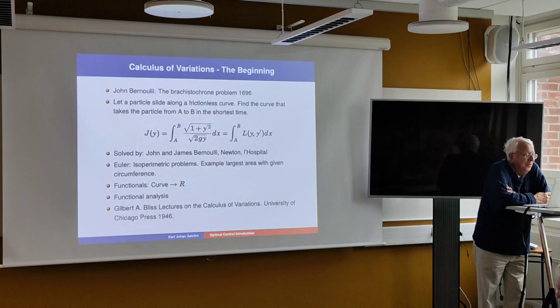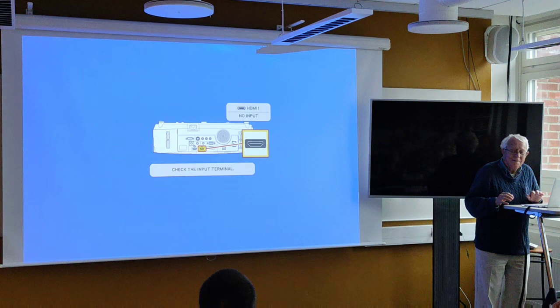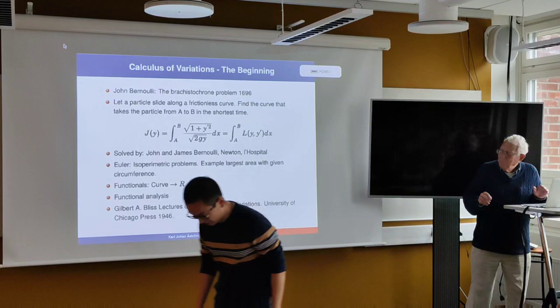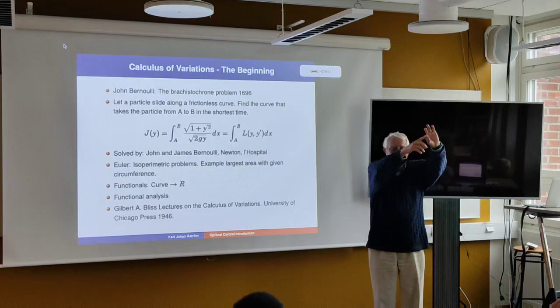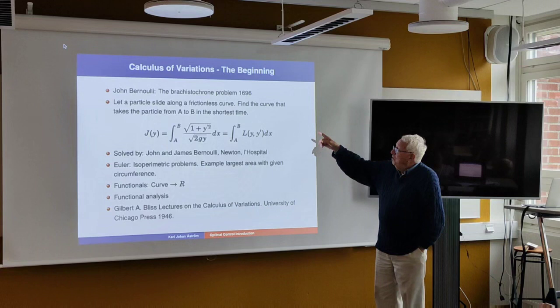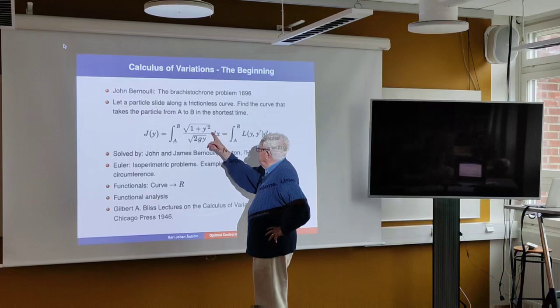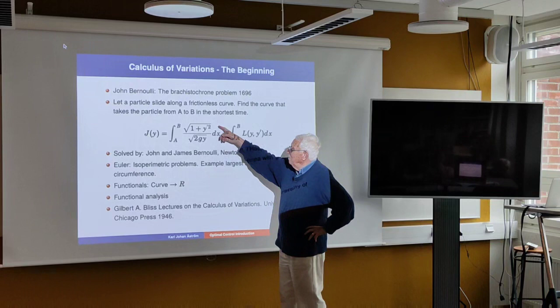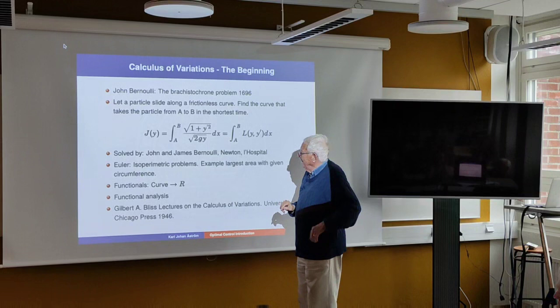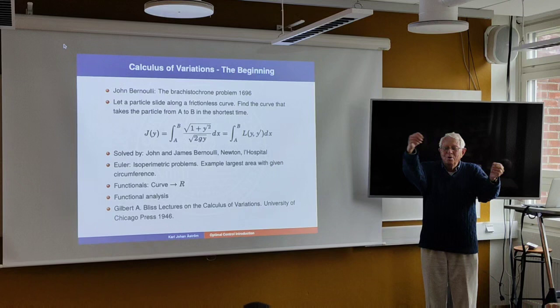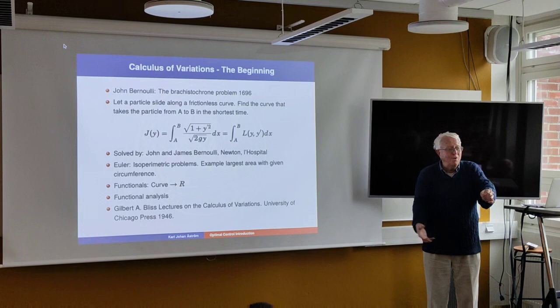First, calculus of variations. You have a particle sliding across a path from A to B, pushed by gravity, and you ask: what should the curve look like to make the particle travel in the shortest time? Here's roughly the time integral: one plus the derivative squared over the velocity. You have to find a path that minimizes this. That was solved by Bernoulli, Newton, and L'Hopital. There were other problems of similar nature — for example, finding the shape of a curve that encloses the largest area, which turns out to be a circle.